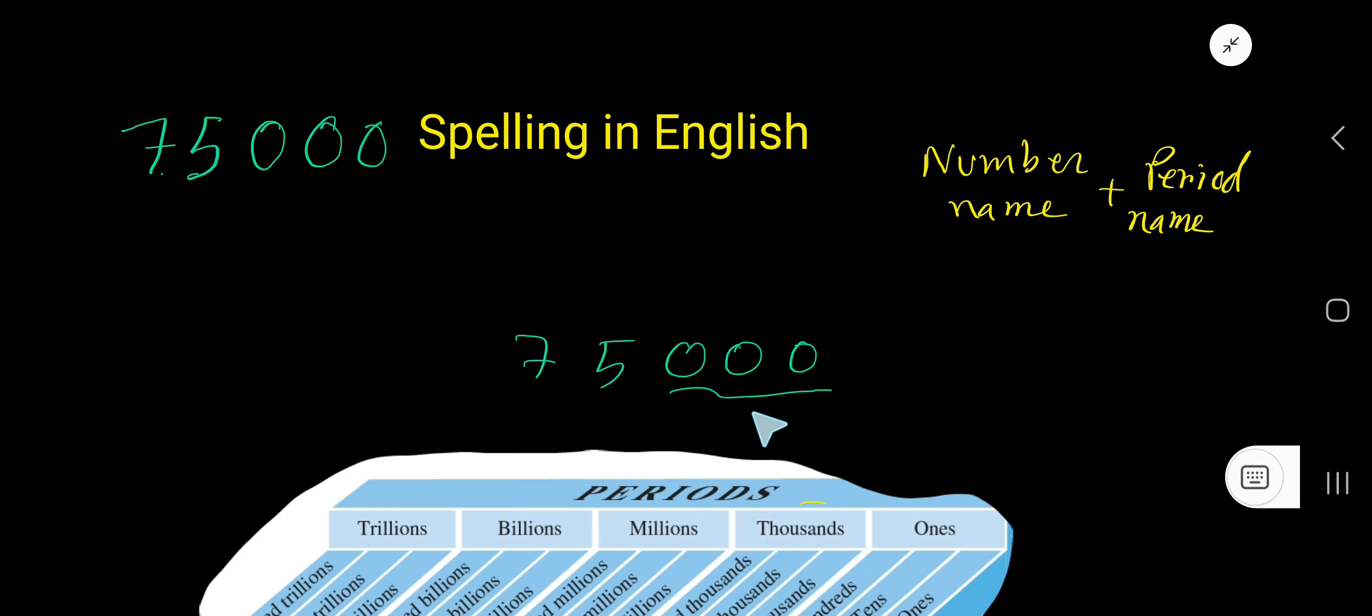is ones period, and the name of the second period is called thousands period. In the thousands period we have just two digits. You can use a comma to separate these two periods. So in thousands period we have the number 75.